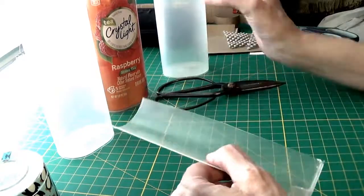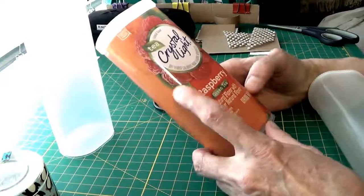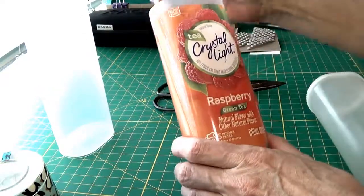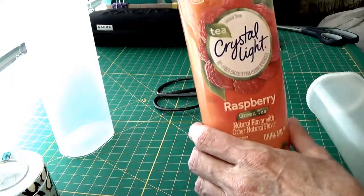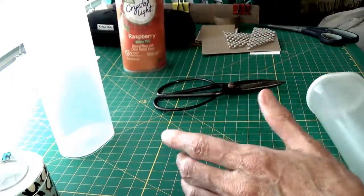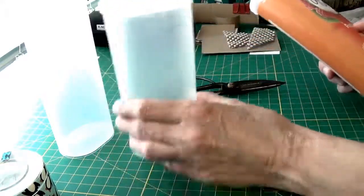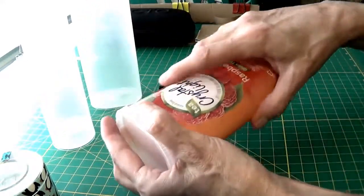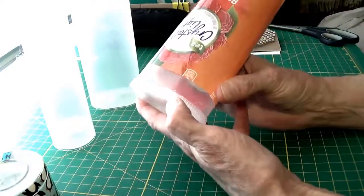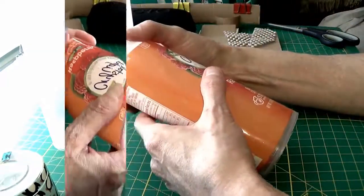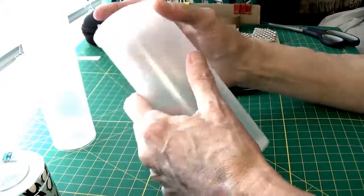This is a Crystal Light container. It contains five or six of these packets—this is raspberry green tea. What I do is when this one's empty, I just remove the wrapper and save these containers. That one becomes this one.